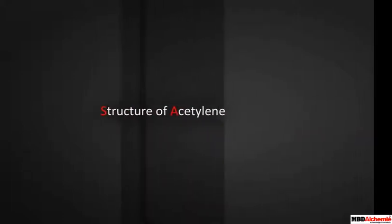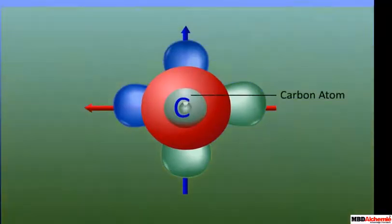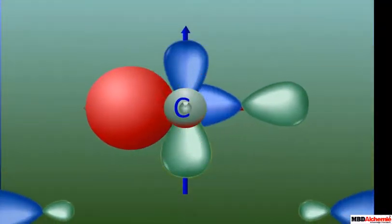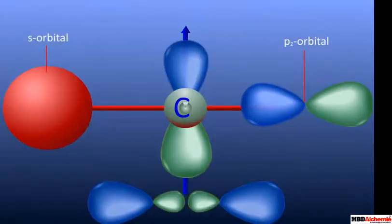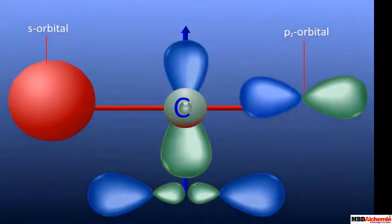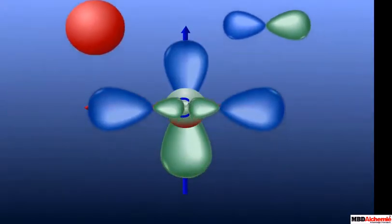Structure of Acetylene. In the present, it is shown that carbon atom S and P orbitals of proper orientations—that is, spherical S orbital and dumbbell-shaped PZ orbital—hybridize together to form two SP hybrid orbitals.